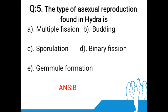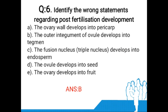Fifth question: The type of asexual reproduction found in Hydra is A: multiple fission, B: budding, C: sporulation, D: binary fission, E: gamete formation. The answer is option B. In Hydra, asexual reproduction mainly occurs through external budding in the middle and basal part of the body. The bud initially grows as a diverticulum, soon developing a gastrovascular cavity, tentacles, hypostome, and mouth. The cavity of the bud later separates from the parent body, forming a young Hydra.